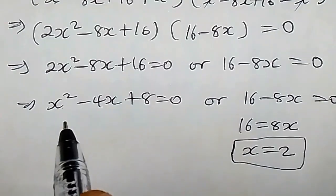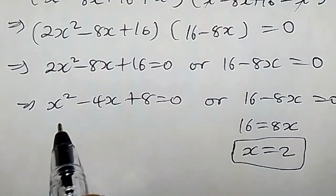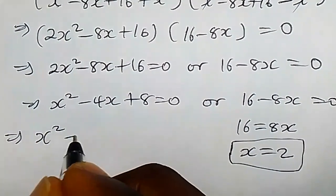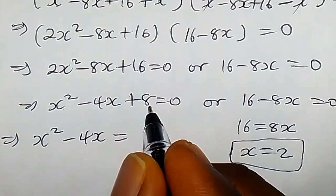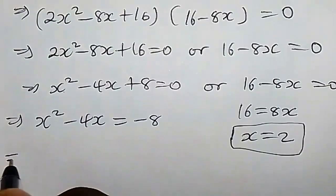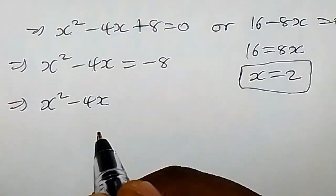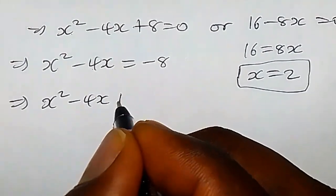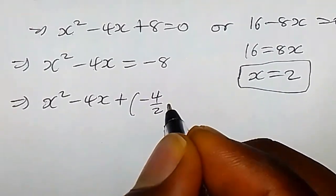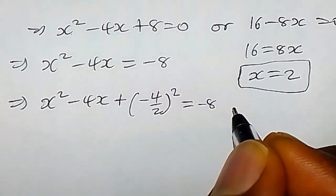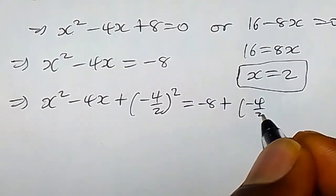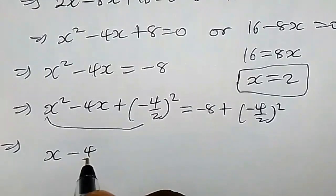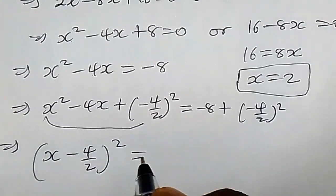Now let's consider the quadratic equation. This quadratic is not factorable, so we'll use completing the square. This gives x squared minus 4x equals negative 8. We add the square of half the coefficient of x to both sides: x squared minus 4x plus (negative 4 over 2) squared equals negative 8 plus (negative 4 over 2) squared.